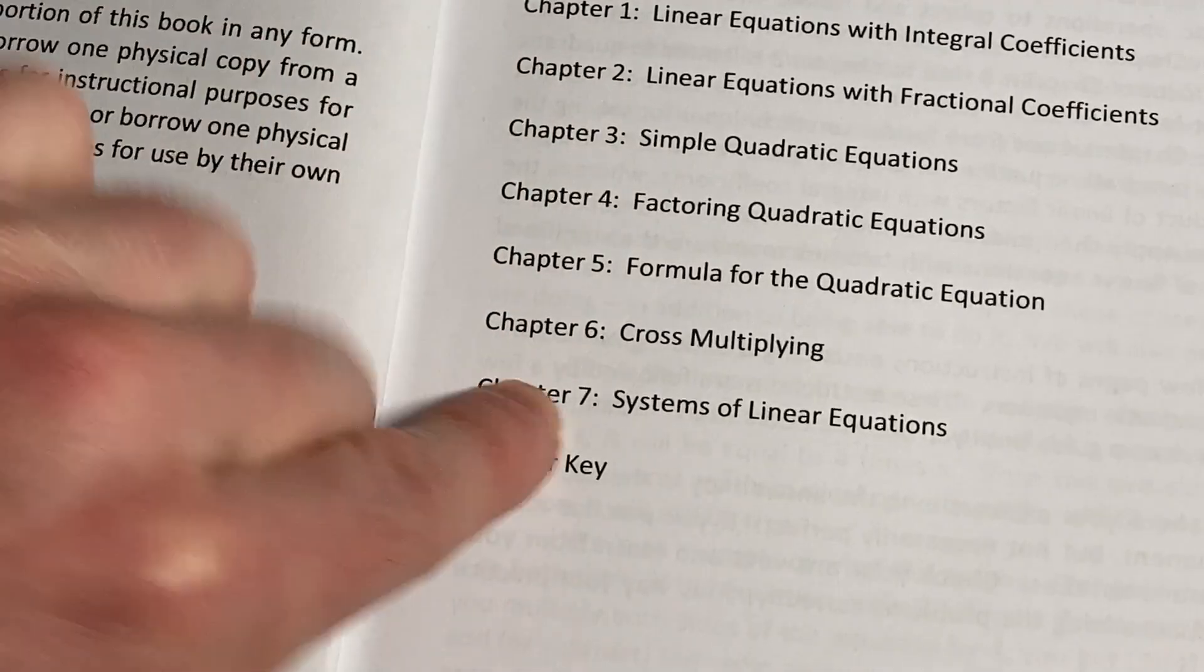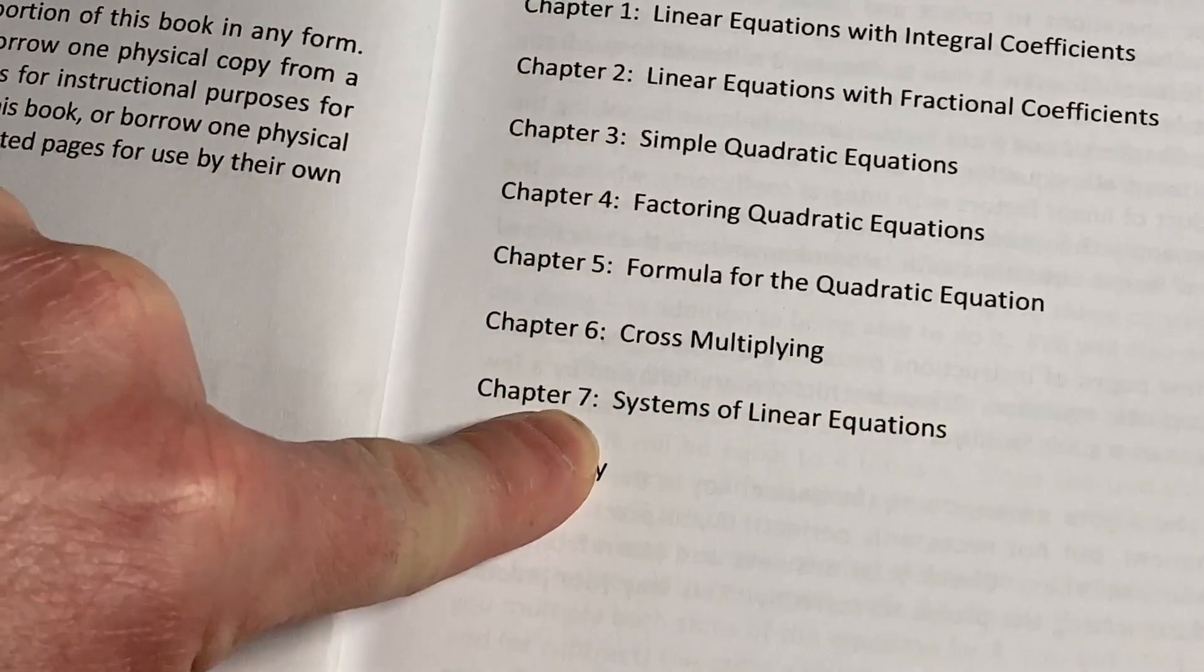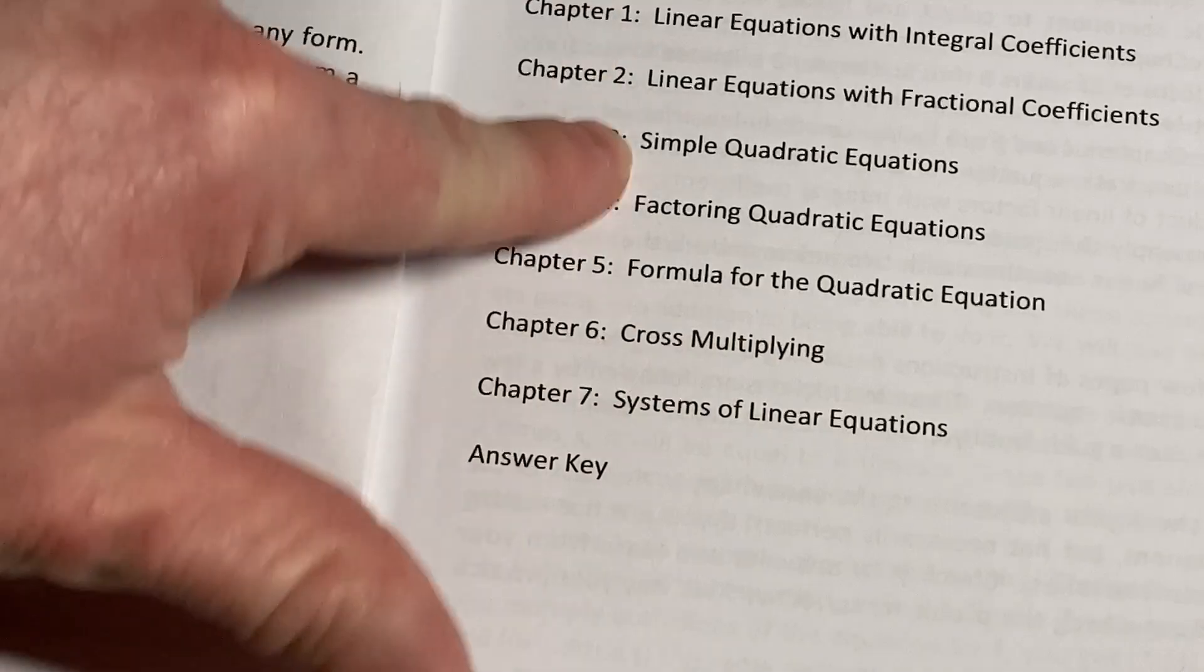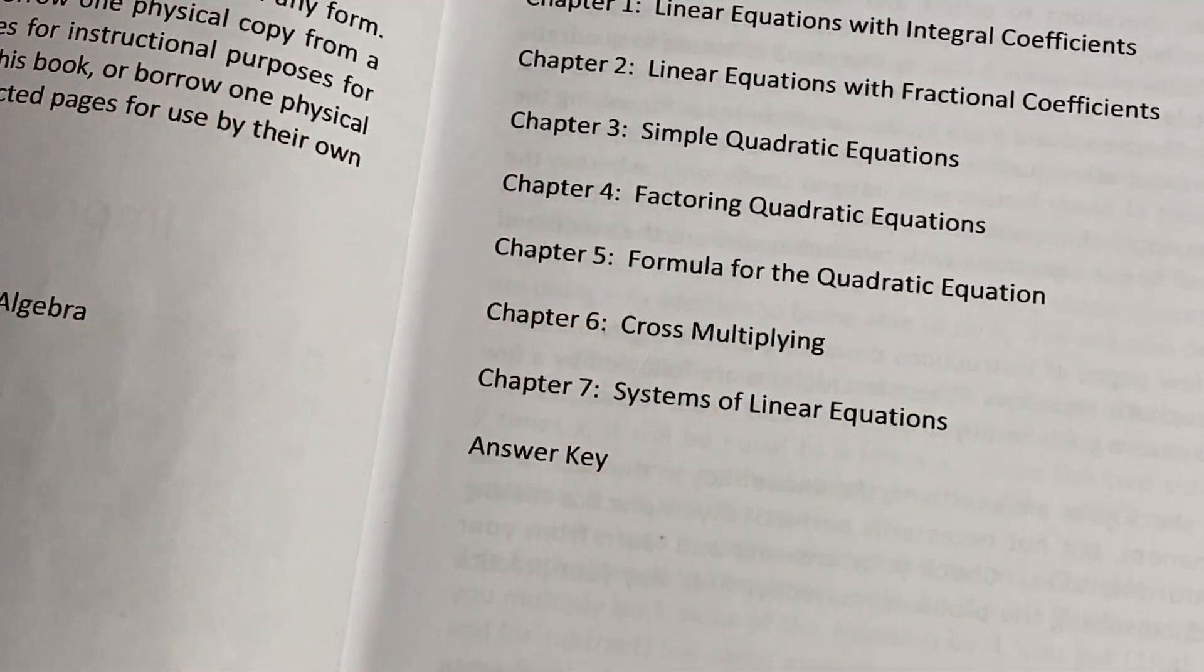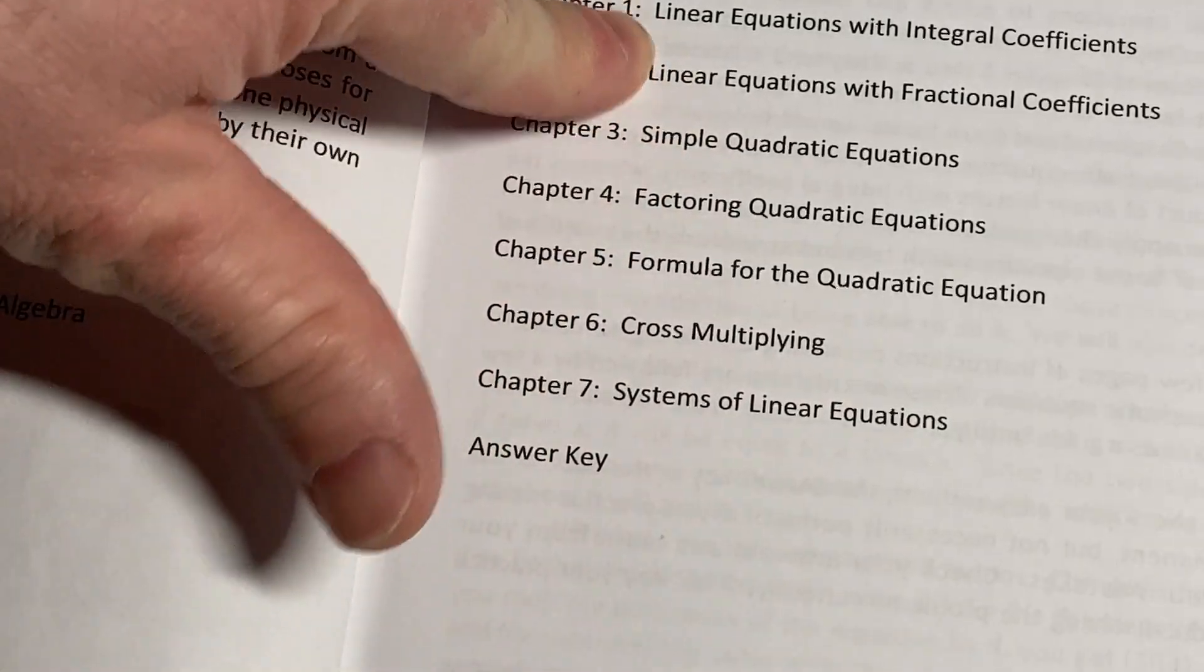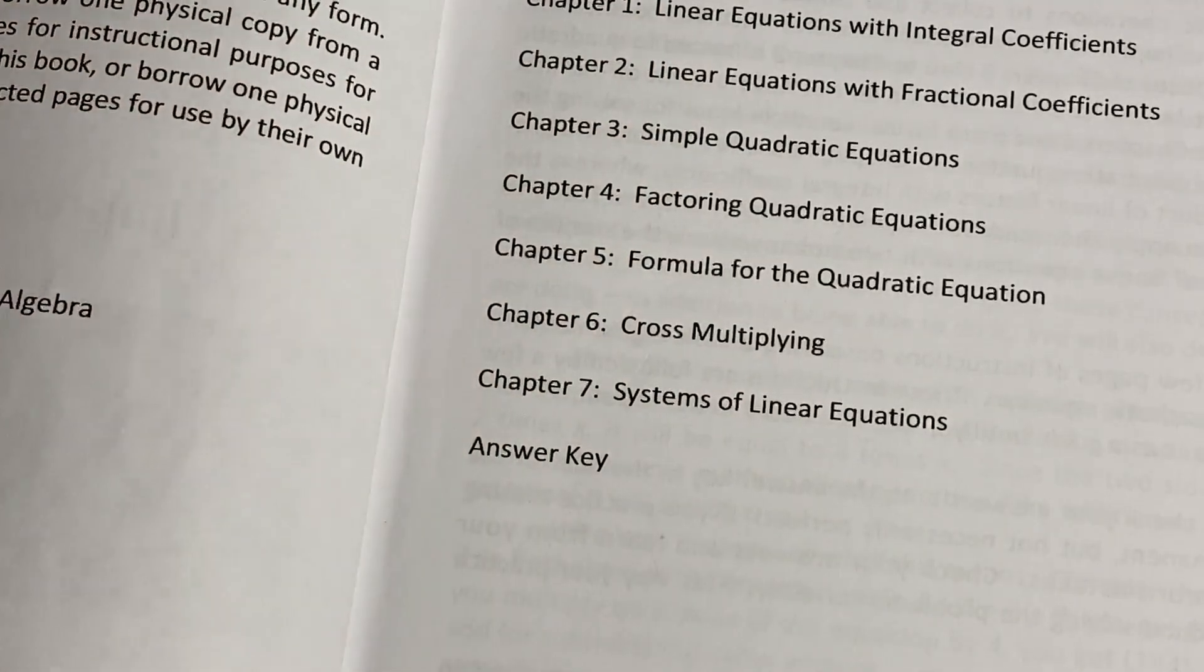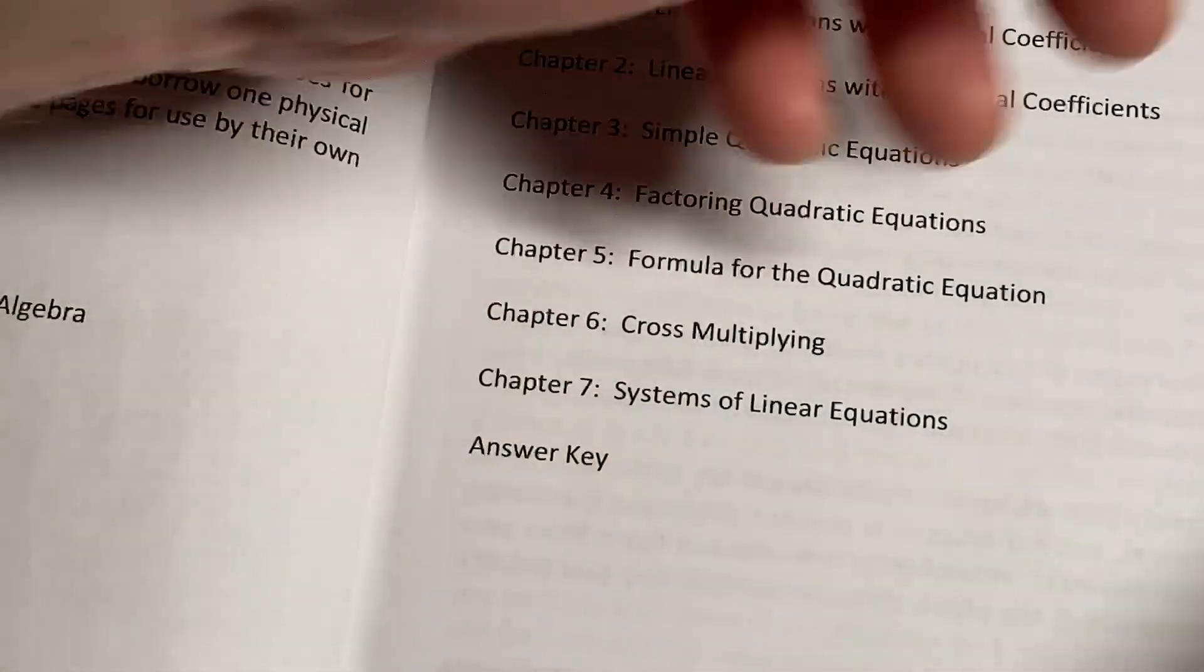And then same thing here systems of linear equations, that's typically one chapter. Cross-multiplying that usually comes up in really basic math books like intermediate algebra books. And then linear equations that comes up again in most algebra books. So really really basic stuff.